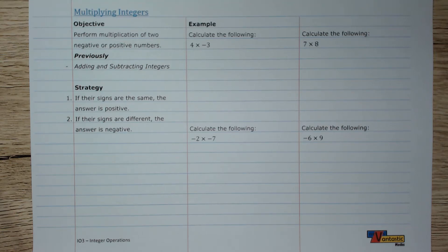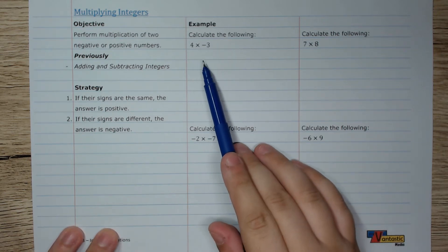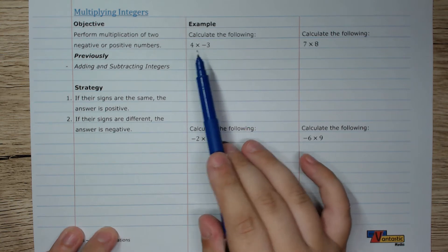Hi, this is Mr. V, and in this video we are going to look at how to multiply two integers. Now you remember that integers are any number, any whole number, that can be either positive or negative.